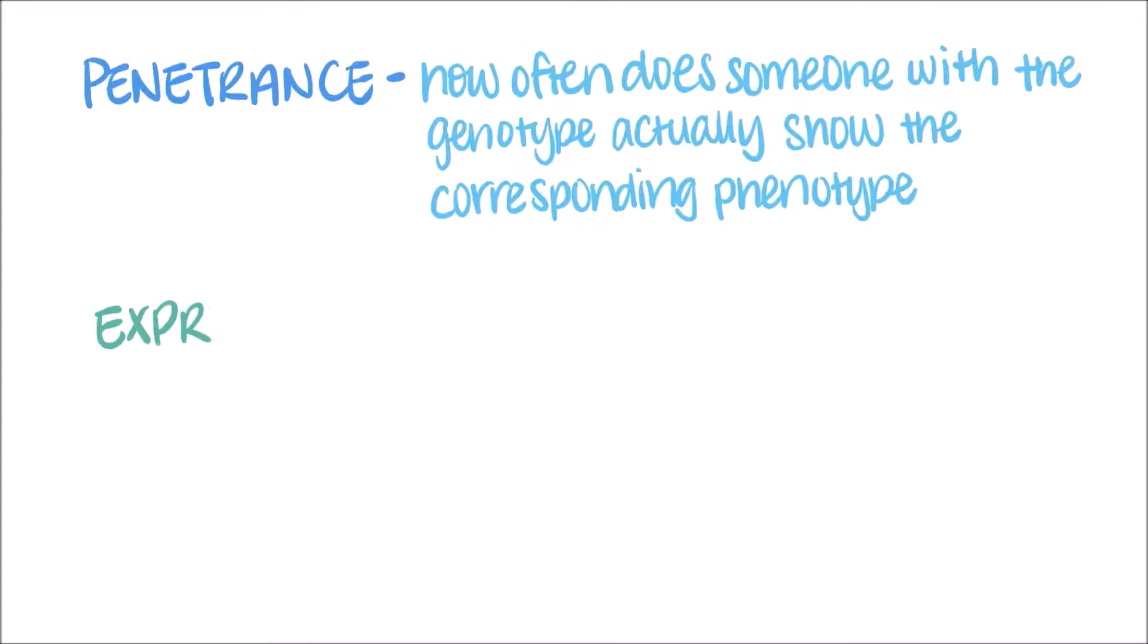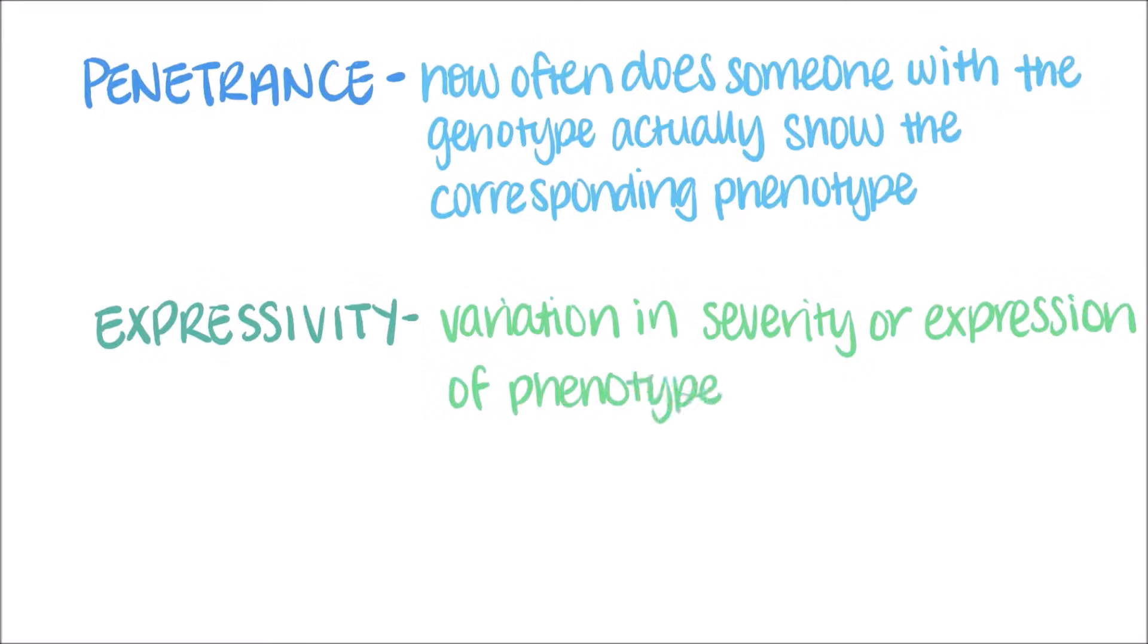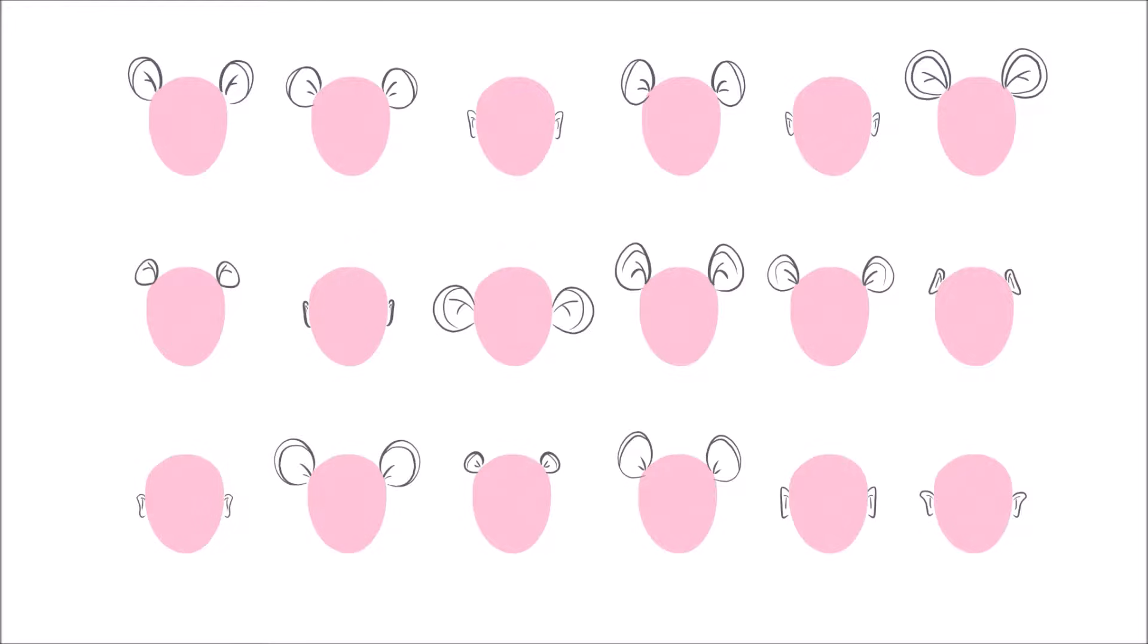This group of individuals also show variable or broad expressivity. Expressivity refers to the variation in severity or expression of the phenotype. In this example, some people might have bigger mouse ears, and some may have smaller mouse ears.